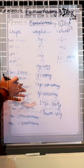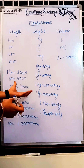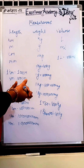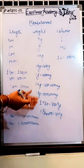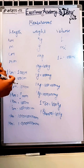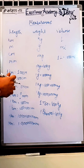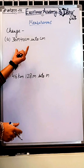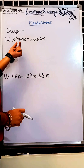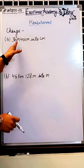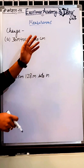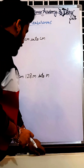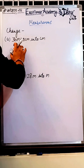This is the chart which you must know in your classes — this chart is compulsory. If you know this chart, you can solve your questions very easily. Now let us move to the next part: how to solve the questions. For example, we have to change 30 meter 40 centimeter into centimeter, and 46 kilometer 120 meter into meter.